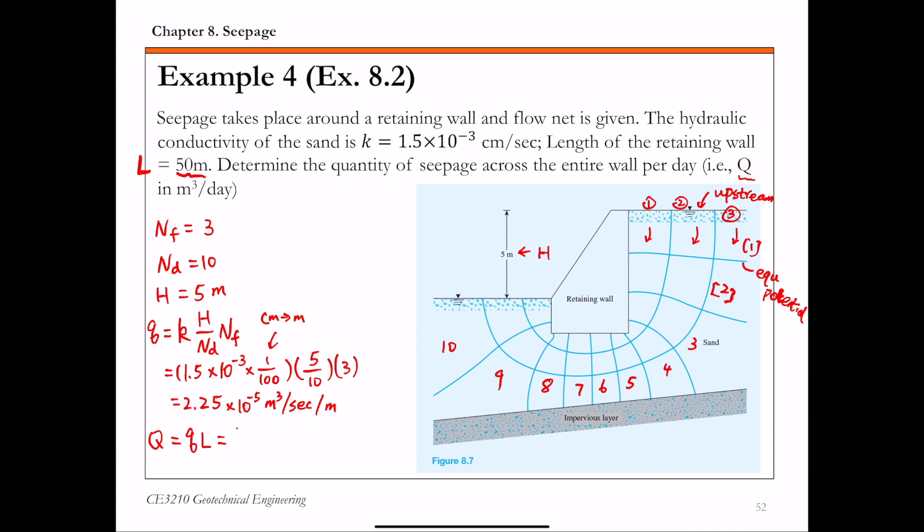Plugging in numbers: 2.25 times 10 to the negative 5 times 50, then convert to cubic meters per day by multiplying by 24 hours times 3600 seconds per hour. That's 97.2 cubic meters per day.